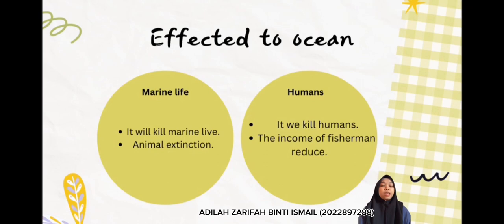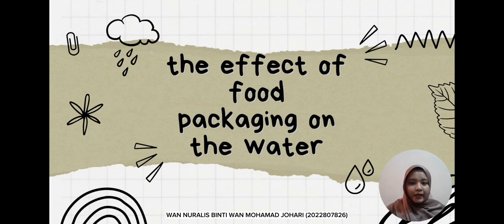The second effect on the ocean concerns humans. Plastic can harm us when we eat fish that have consumed contaminated plastic, since plastic is made of chemicals. It can also affect human income — for example, fishermen cannot catch many fish because fish are dying, and their income is reduced. That's all from me. Thank you.